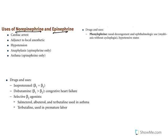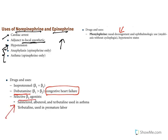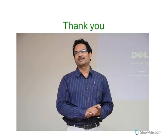Key clinical applications: norepinephrine and epinephrine are used in cardiac arrest, as adjuncts to local anesthetics, to treat hypotension, and to treat anaphylaxis and asthma. Phenylephrine is a popular decongestant. Dobutamine and beta-2 active drugs are used in congestive heart failure. Beta-2 agonists — salbutamol, albuterol, terbutaline — treat asthma, while terbutaline and ritodrine are used to prevent premature labor as uterine relaxants. This concludes the overview of sympathetic adrenergic agonists.